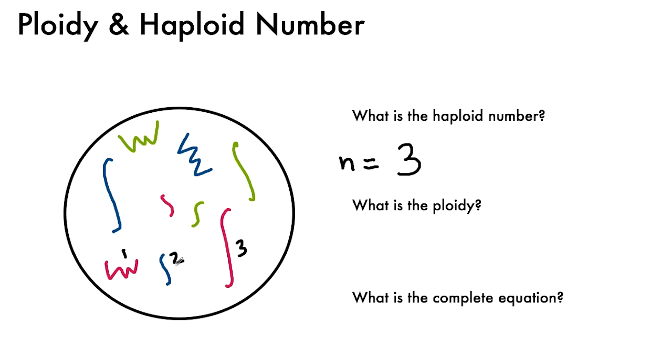So how many of the ones that look like number one are in the cell? One, two, three. How many look like two? One, two, three. How many look like three? One, two, three. So our ploidy is three.